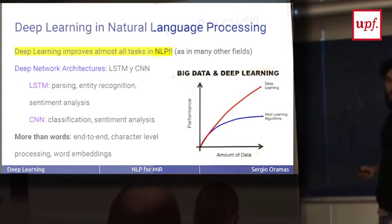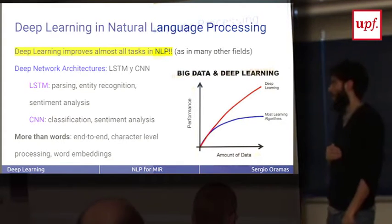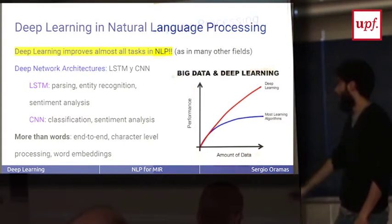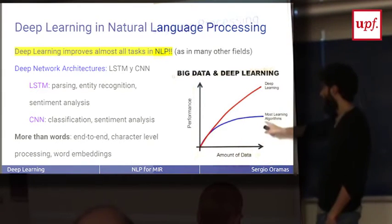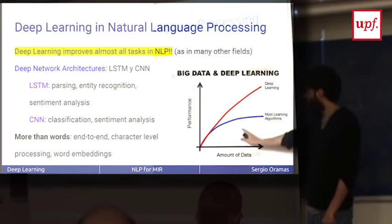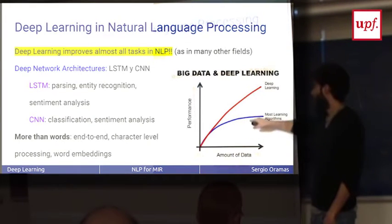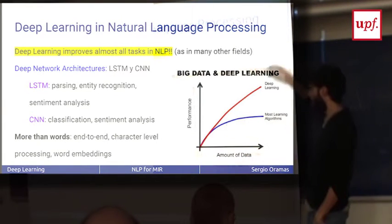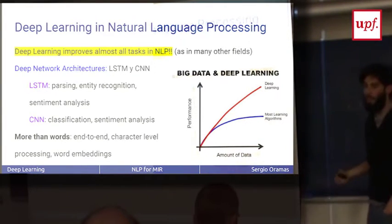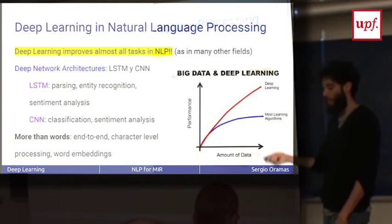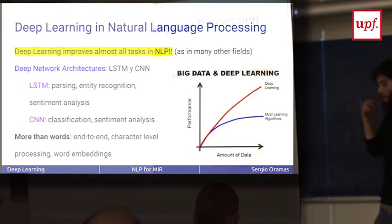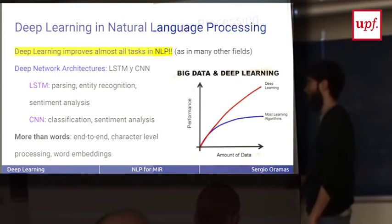We're seeing that deep learning is used everywhere and this is a typical graph of what happens with deep learning. Even if you're training on machine learning, you have a lot of data, the performance is kind of constant, but deep learning can outperform machine learning if you have enough data. In NLP also, every single task that we planned at the beginning now has deep learning approaches to improve these tasks.